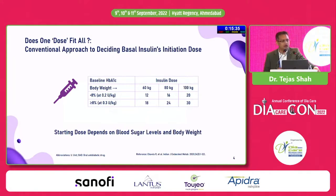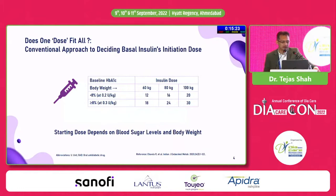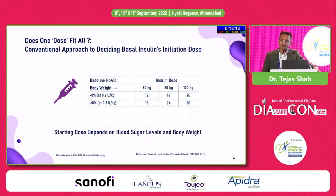The simple way to start off basal insulin is to decide in terms of body weight or unit per kilogram. If the person's body weight is around 60 kg and the A1C is less than 8%, you can start off with around 0.2 units per kg. If the A1C is more than 8%, the recommendation is to start at around 0.3 units per kg, and subsequently the dosage will keep changing according to weight.